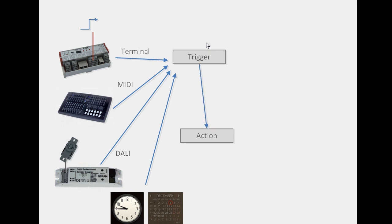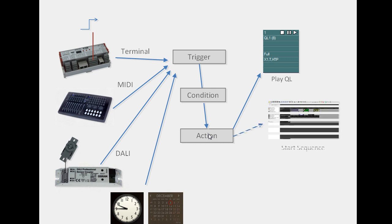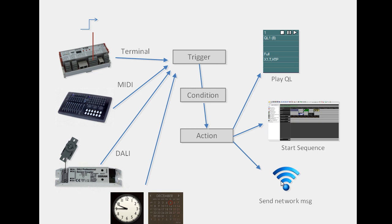The trigger and action are bound together, but you can limit whether the trigger always creates an action by using a condition. This condition limits the execution range of the trigger. The resulting action could be, for example, to play a cue list in the programmer, start a sequence, or simply send a network message to another peer or system.